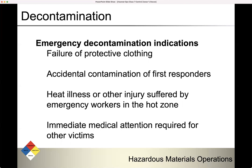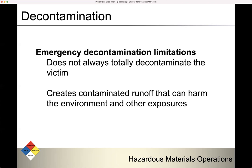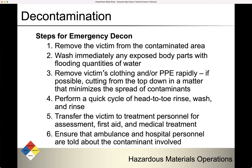Indications for emergency decontamination — remember this is for entry team personnel: failure of protective equipment, accidental contamination, heat illness or other injury, or any other immediate medical attention required. Limitations: it does not always totally decontaminate the victim, and it creates contaminated runoff that can harm the environment and cause additional exposures. Steps for emergency decon: remove the victim from the contaminated area; wash any exposed body parts immediately with flooding quantities of water; remove the victim's clothing and PPE rapidly, cutting from the top down to minimize spread of contaminants; perform a quick cycle of head-to-toe rinse, wash, and rinse; transfer to treatment personnel; and ensure ambulance and hospital personnel are told about the contaminant involved.